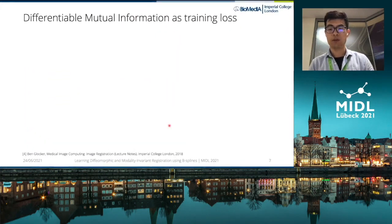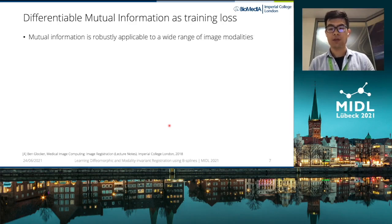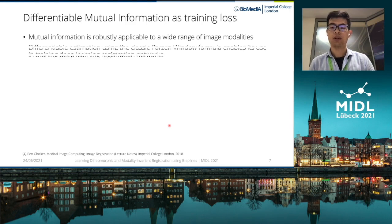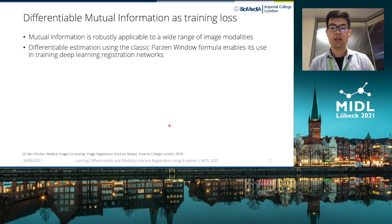Another important component for image registration is the intensity-based similarity metric used to guide the optimization. Mutual information is such a metric that is robustly applicable to a wide range of image modalities, especially when the intensity relationship between the images is non-linear, which is common in multimodal registration. In order to train a deep learning registration network, the mutual information estimation needs to be differentiable to allow backpropagation. For this, we use a classic Parzen-window estimation method, which essentially uses kernel density estimation for the intensity distributions needed to compute mutual information.